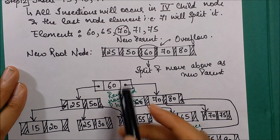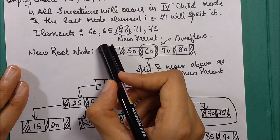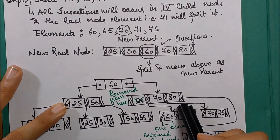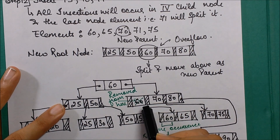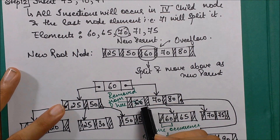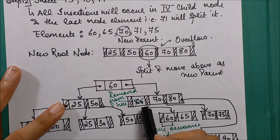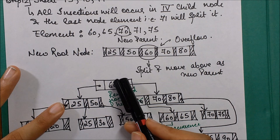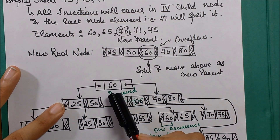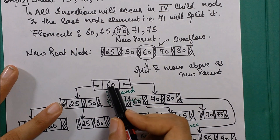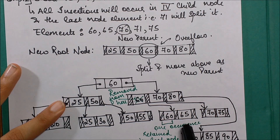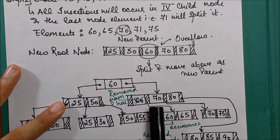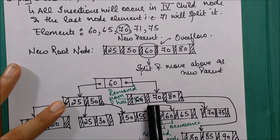After the root split, the left side becomes the left child and the right side becomes the right child. You might think to insert 60 at the higher level only — but the answer is no. We must retain a copy of 60 at the last level, so 60 is inserted on the left-hand side of 70, since 60 < 70.